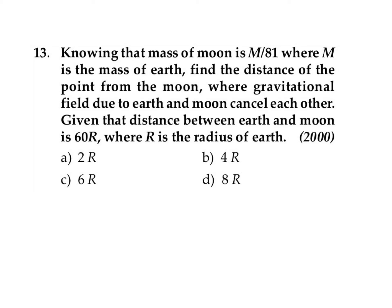Knowing that the mass of the moon is M/81 where M is the mass of Earth, find the distance of the point from the moon where the gravitational field due to Earth and moon cancel each other. The distance between the Earth and the moon is given as 60r, where r is the radius of Earth.